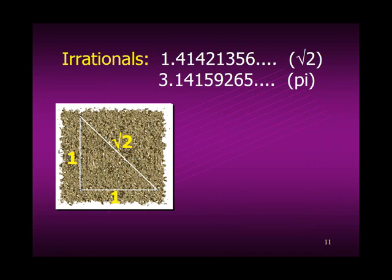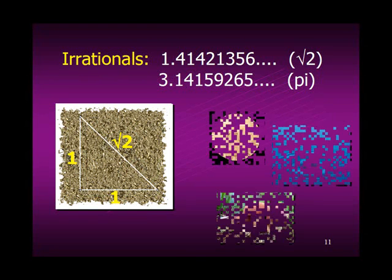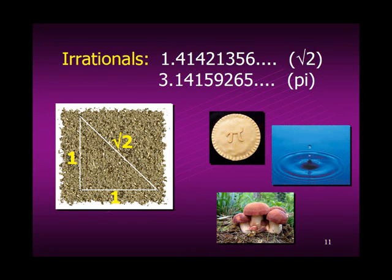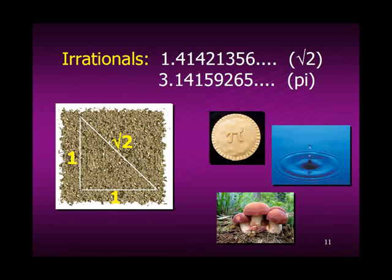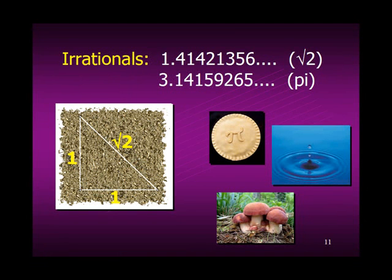When it was discovered that the diagonal of a square often can't be expressed as a rational number, we added irrational numbers. Such numbers are also required to deal with circular shapes. For any circle, pi is the ratio of its circumference to its diameter. These four types of numbers constitute the real number system, and note carefully, all of them correspond to things in the real world.